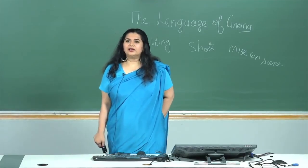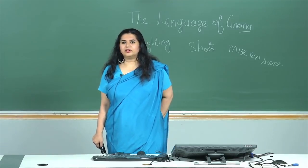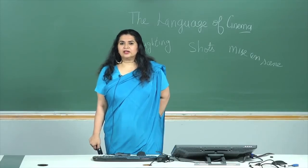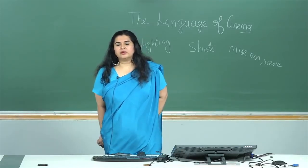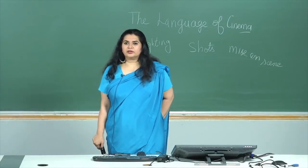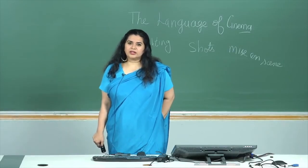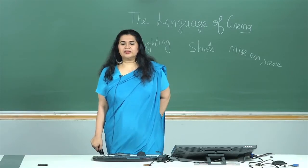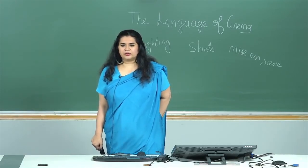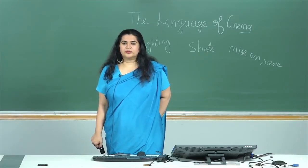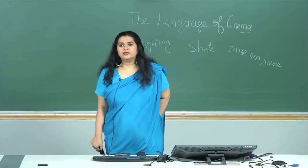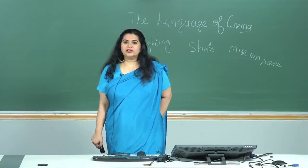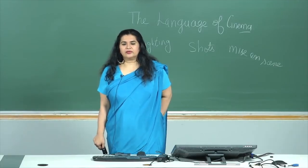Camera angle is the placement of the camera in relation to the object or person on view. Angle can be used for both aesthetic and psychological purposes. A low angle is where the camera is placed below eye level and looks up at the subject to suggest power and domination. This is very common in building up the heroic image of Indian film actors — for example, the introductory shots of superstars such as Rajinikanth or Amitabh Bachchan — done to create a larger-than-life image. Orson Welles also did it several times in Citizen Kane.